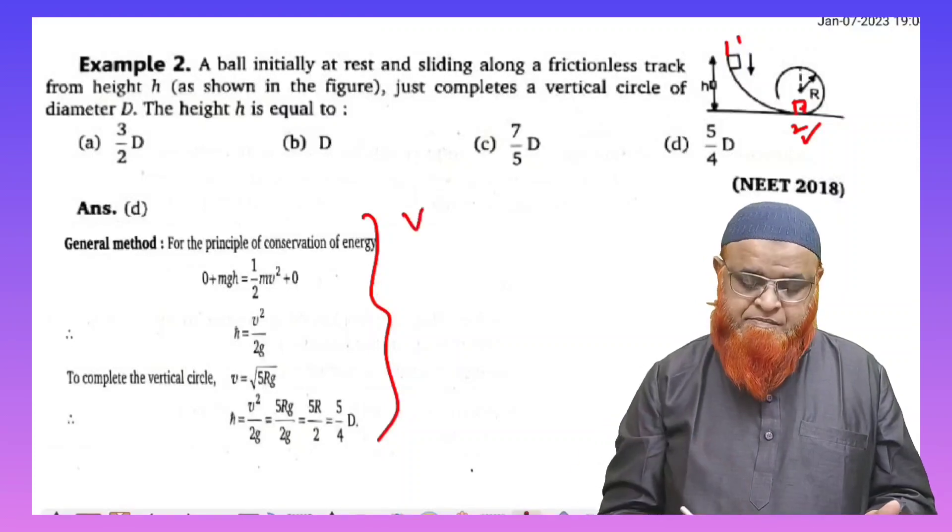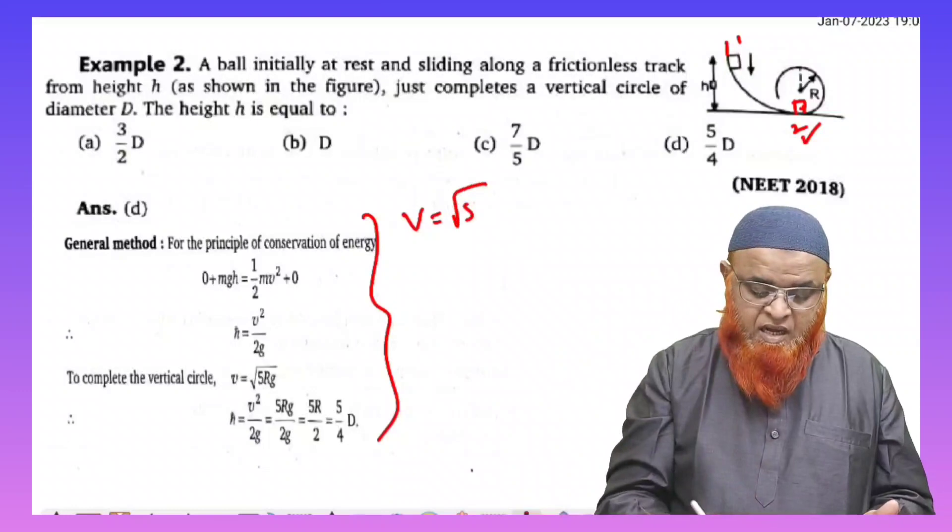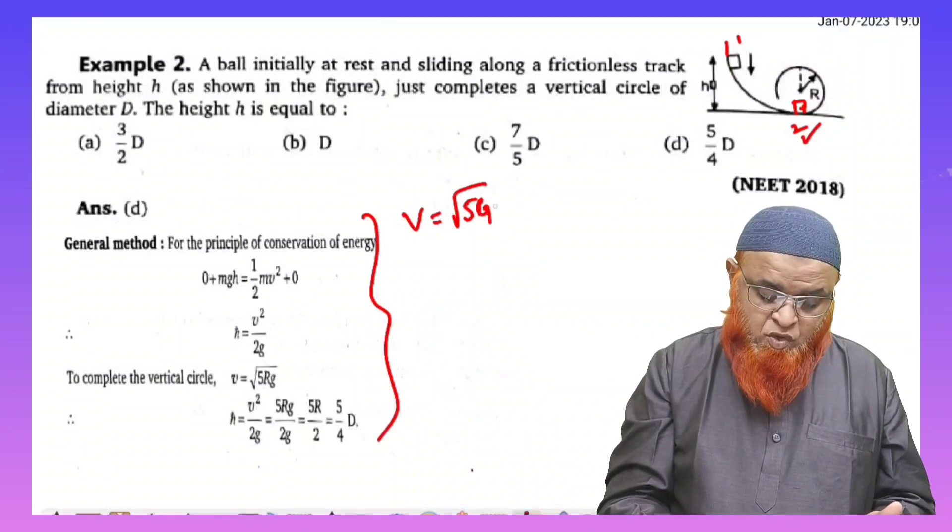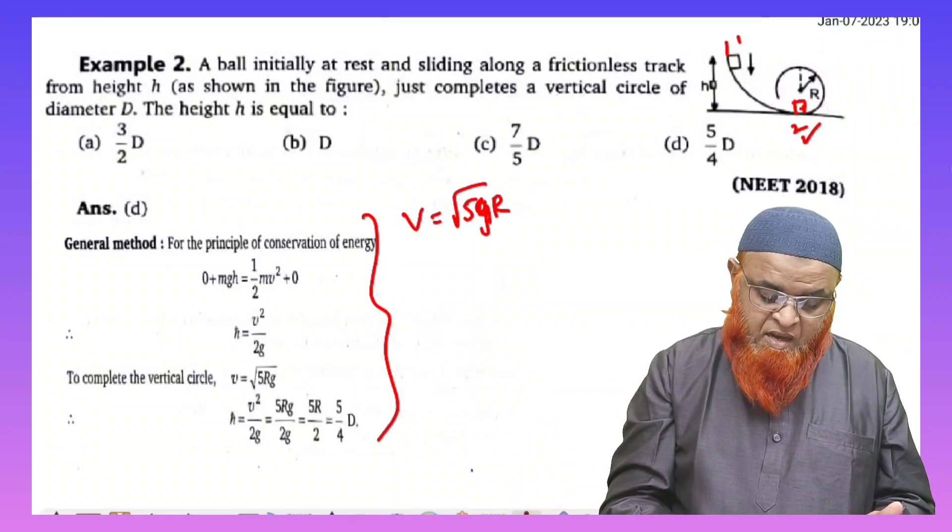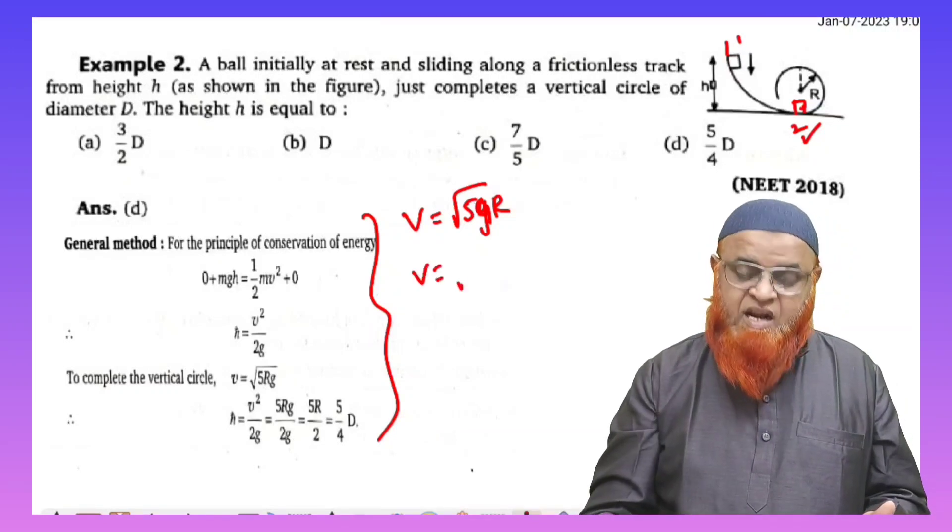what are you going to see here? You can see that velocity because of vertical circle is given as root of 5gr, root of 5gr. But as it is dropped from a certain height here,